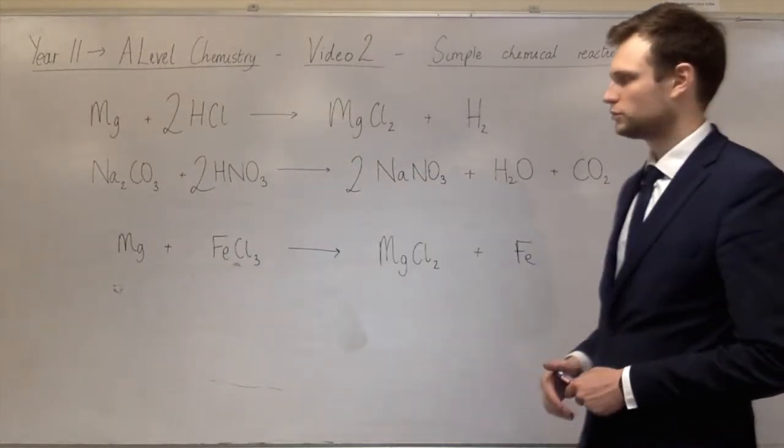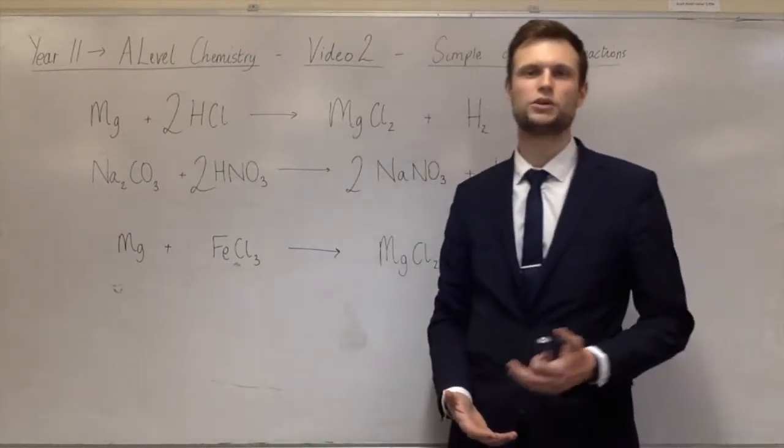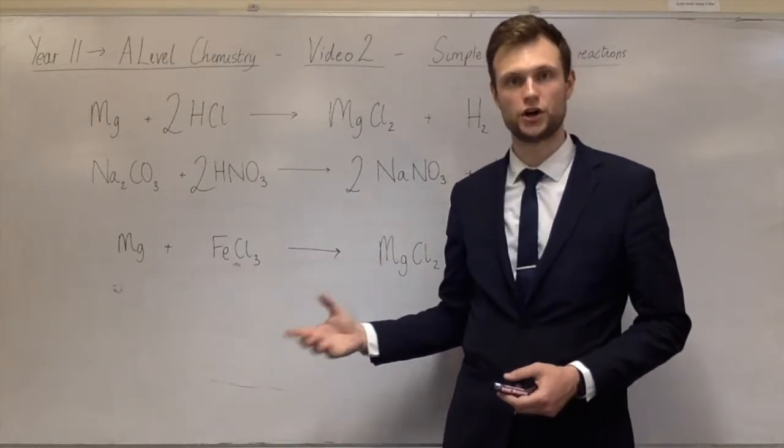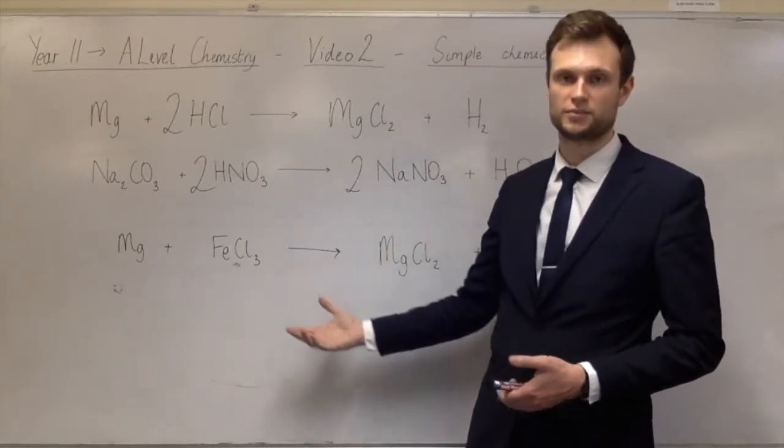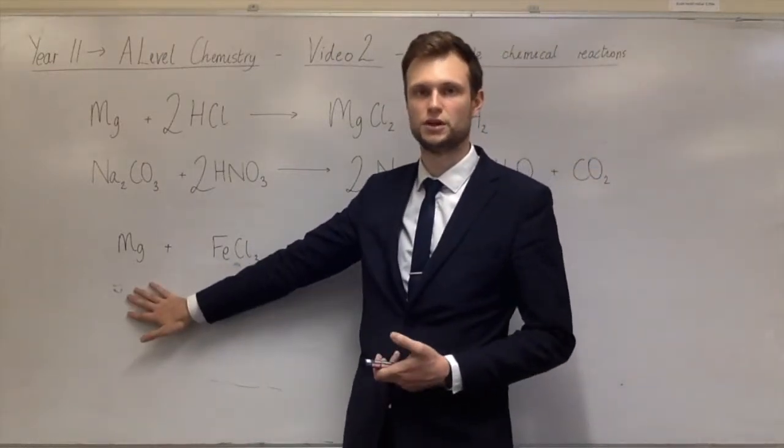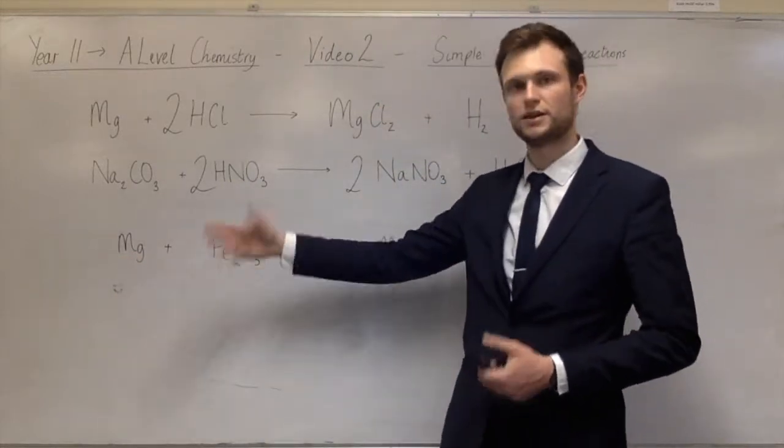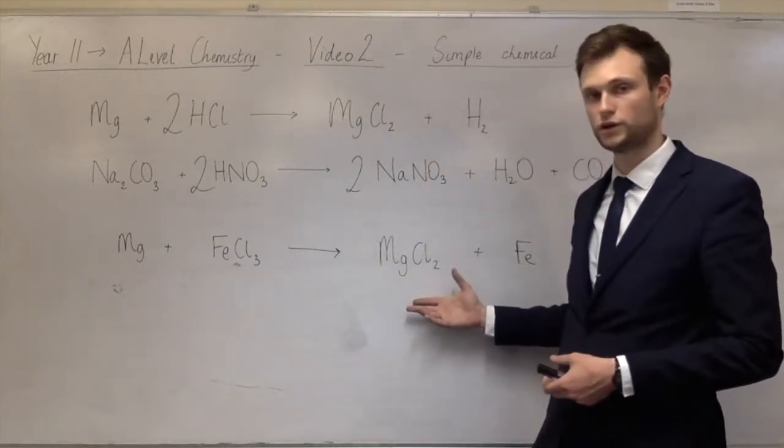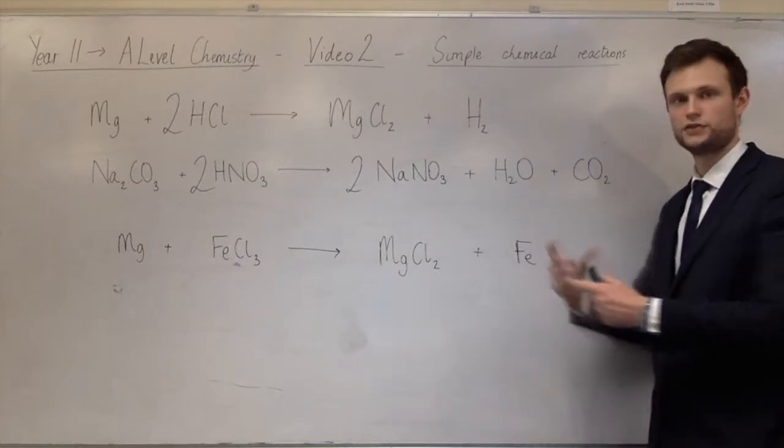This next one I've made a bit more difficult. I've used iron 3 chloride. Iron is a transition element. And you'll learn about this when you do A-level chemistry. But iron can make 2 different ions. So a 2 plus ion and a 3 plus ion. I've used the 3 plus. Because it makes things more difficult. Magnesium is just put in there as a metal. Now a metal displacement reaction would be magnesium. Because it's more reactive than iron. Taking the place of iron in that salt. So you'd get magnesium chloride. And iron as a metal. So you can see the metals there have just swapped. So the magnesium is now in the salt. And iron is a pure metal.